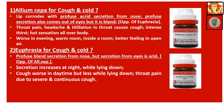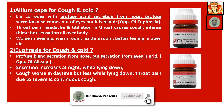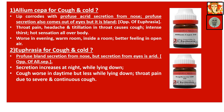Now medicines or remedies are coming. Allium Cepa for cough and cold: lip corrodes with profuse acrid secretion from the nose. Profuse secretion also comes from the eyes but it is bland — opposite of Euphrasia. There is throat pain, headache, and deterioration in the throat causes cough. Intense thirst. Hot sensation all over the body. Worse in evening, warm room, inside a room. Better feeling in open air.